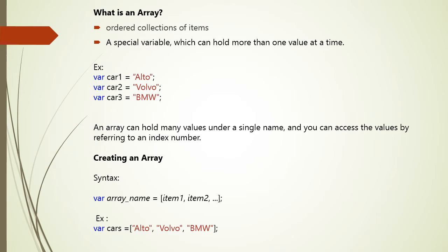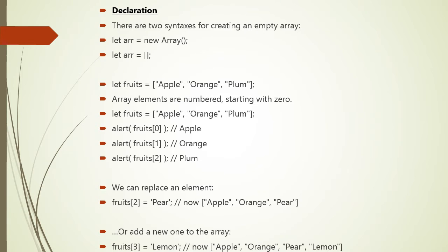Now, how to create an array. Using an array literal is the easiest way to create a JavaScript array. Its syntax is: arrayName = [item1, item2, ...]. You can also create an empty array using 'let array = new Array()' or 'let array = []'. Almost all the time the second syntax is used. We can supply initial elements in the brackets, for example: let fruits = ['apple', 'orange', 'plum'].